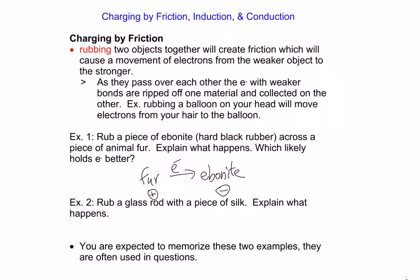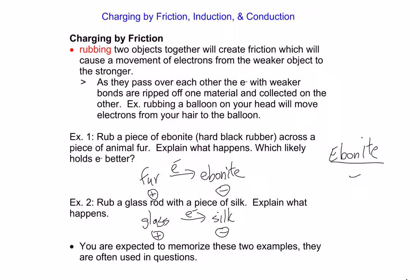The fur is left positive because it's lost electrons, and the ebonite is negative because it's gained electrons. If we do the same sort of experiment with a glass rod and a piece of silk, it works the opposite way — glass ends up giving up electrons to the silk. So the glass is left positive and the silk is negative. Remember: ebonite rubbed will typically be negatively charged, and a glass rod will typically be positively charged.